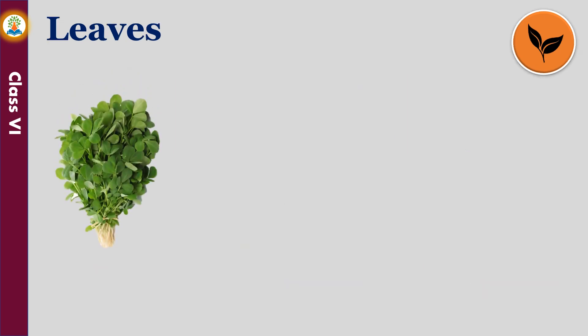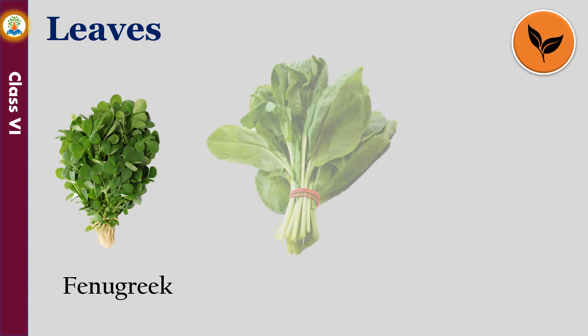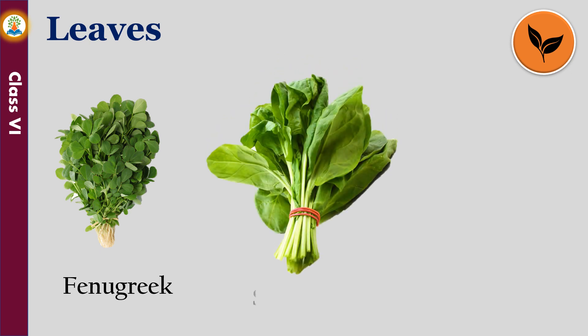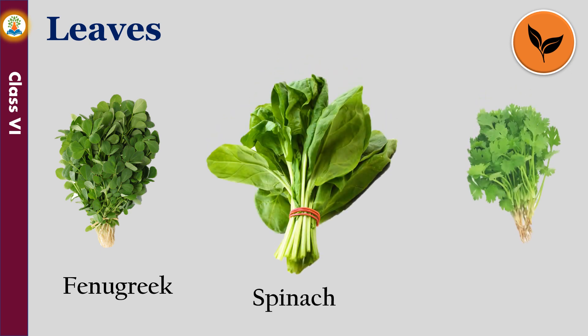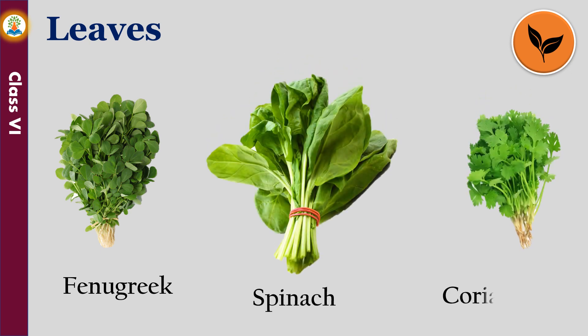Fenugreek, spinach, and coriander are examples of some common edible leaves. Many green leafy vegetables are eaten raw.